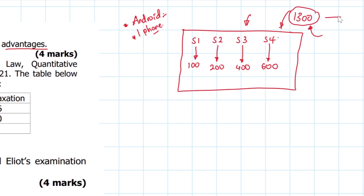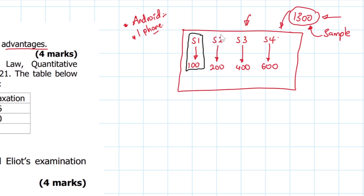So what we do is sampling. We are going to get a representative portion of these 1,300 students — a sample from this population of 1,300 — and it is from that sample that we will make our statistical analysis. The way stratified sampling works is that we divide this population into its distinctive characteristics. Here in the school, we have senior ones, senior twos, senior threes, and senior fours.